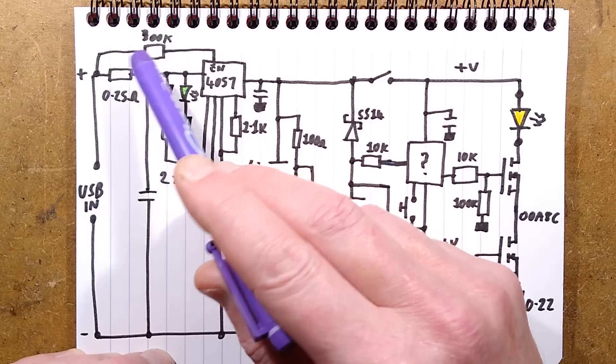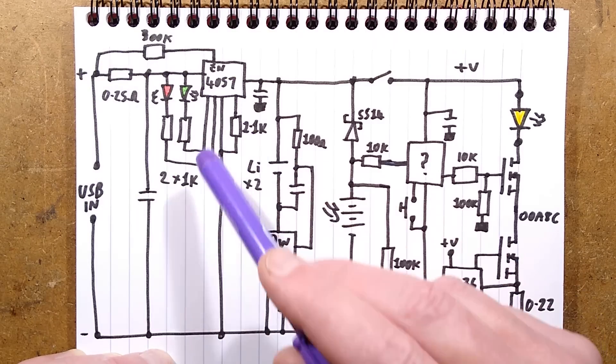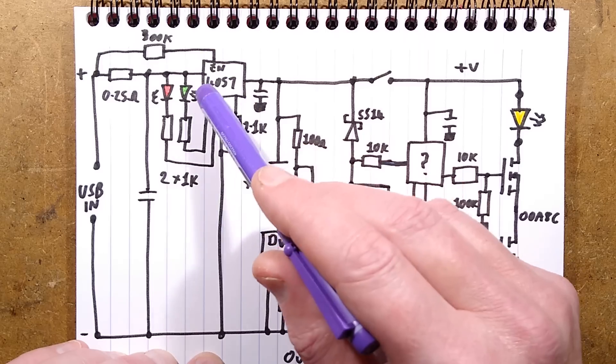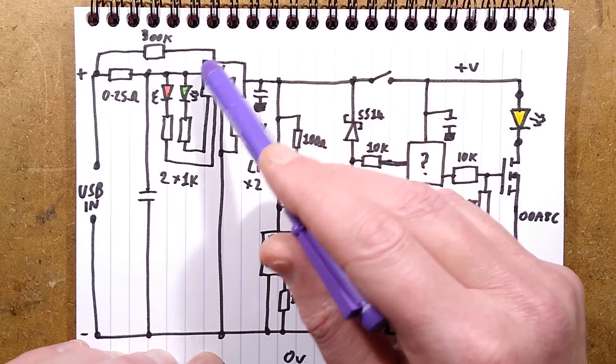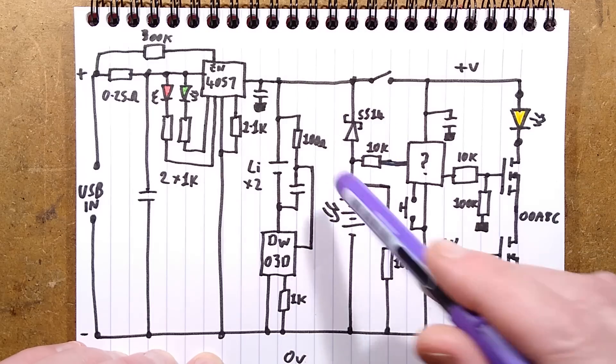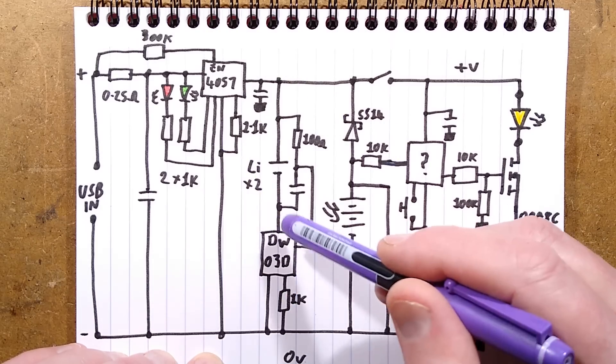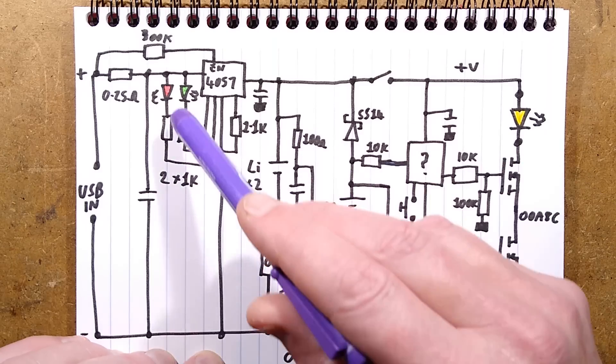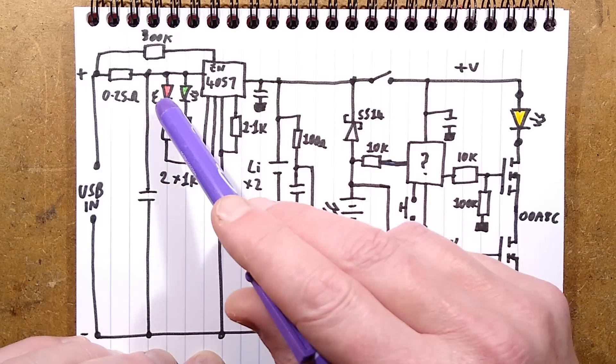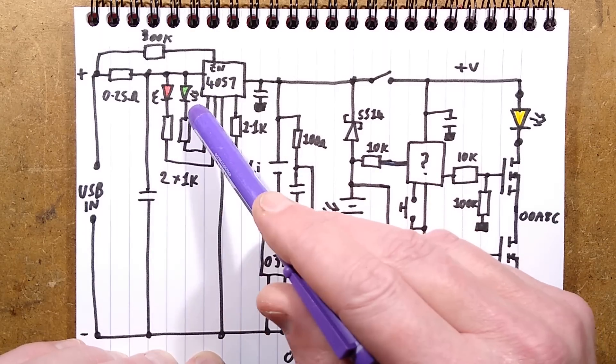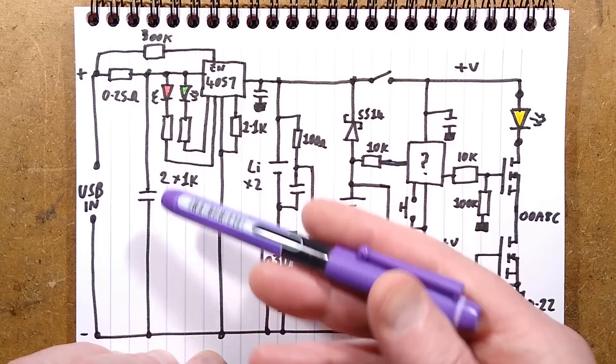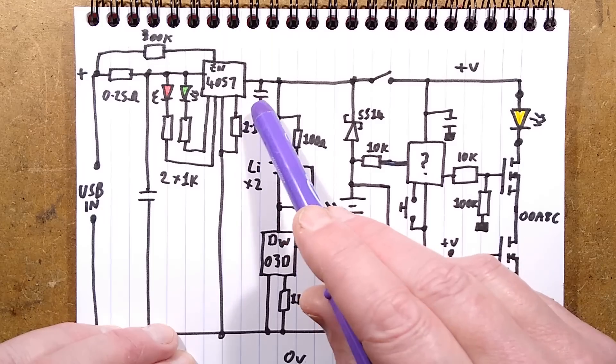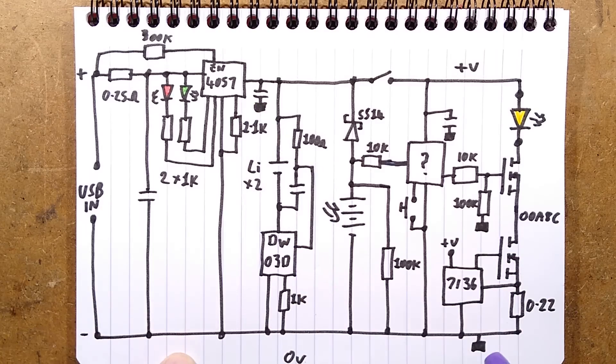There's also a very odd 300k resistor going from the USB input over to the chip to enable it. That's not normally used in other circuits. There's the programming resistor, 1.1k, which is around about one amp usually. Then we've got two 1k resistors for the two LEDs, red and green, which go to the chip so it can signal if it's charging or it's completed charging. Little decoupling capacitor to the zero volt rail.